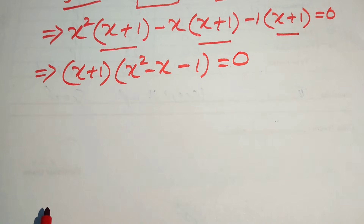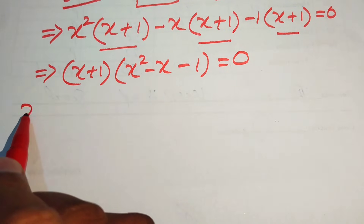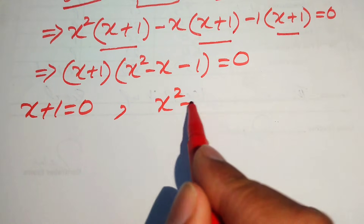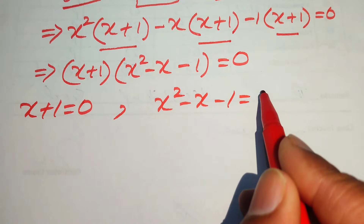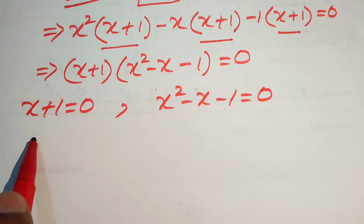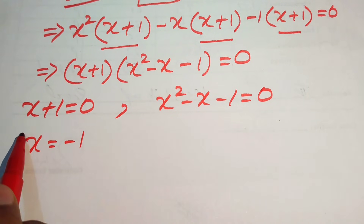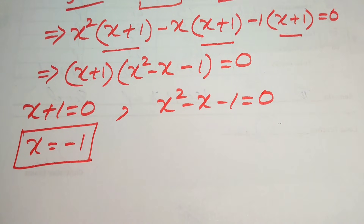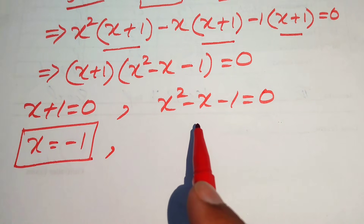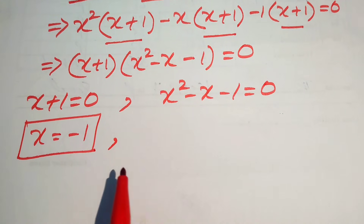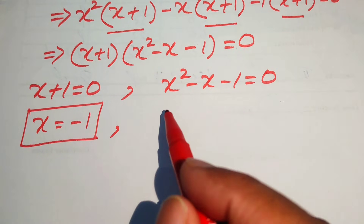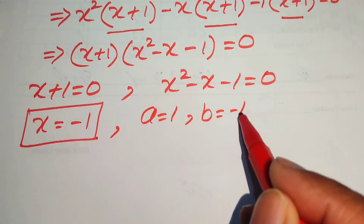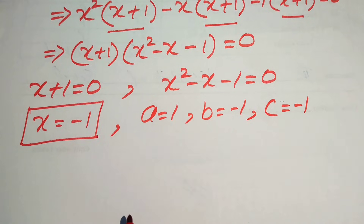We divide into two cases: the first case is x plus 1 equals 0, and the second case is x squared minus x minus 1 equals 0. From the first case we easily get x equals minus 1, which is the first real root of the given equation. To solve the quadratic, we apply the quadratic formula with coefficients a equals 1, b equals minus 1, and c equals minus 1.